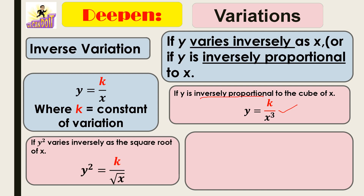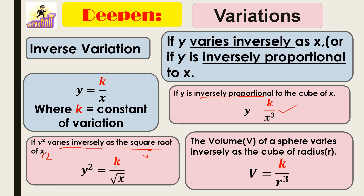Another expression: if y squared varies inversely as the square root of x, the variation is written with k over the square root of x, where square root is written with a radical sign and has an exponent. The third expression: the volume of a sphere varies inversely as the cube of the radius. The constant k is always inserted in its variation.